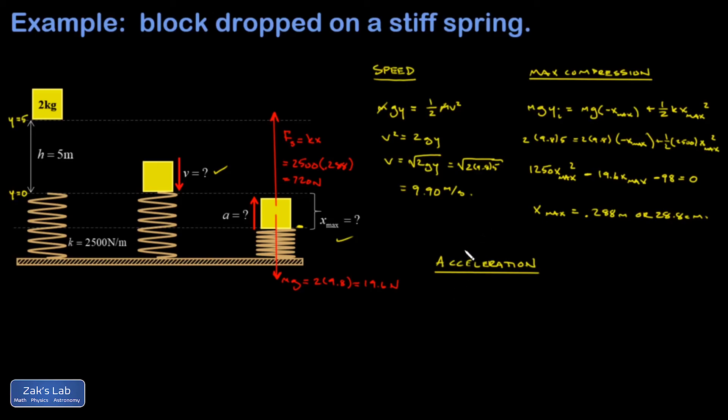So I just have a little bit of calculation to do. I'm going to write down Newton's second law. So f net on this thing is equal to ma. And the net force, well, that's 720 up, 19.6 down, equals 2 times a. Combining the numbers on the left and dividing by 2, I end up with a equals 350 meters per second squared. And we're done.